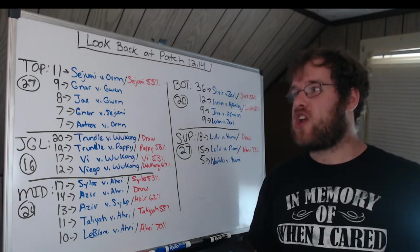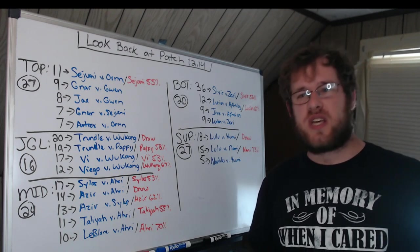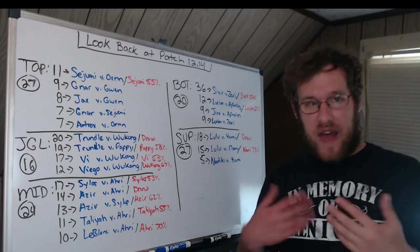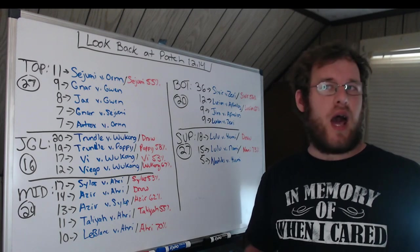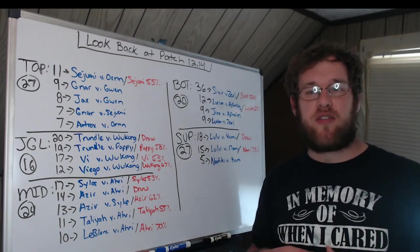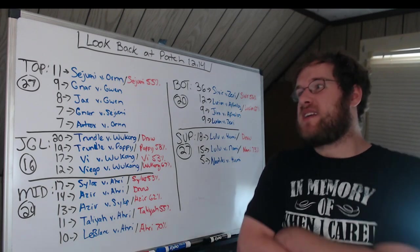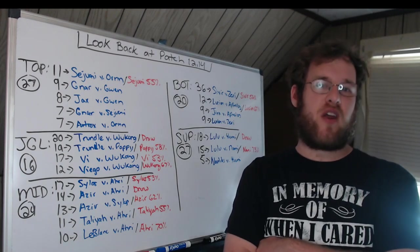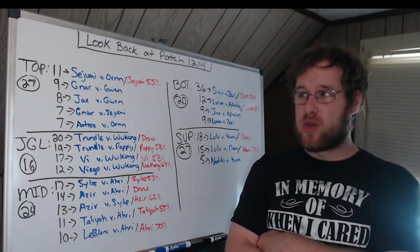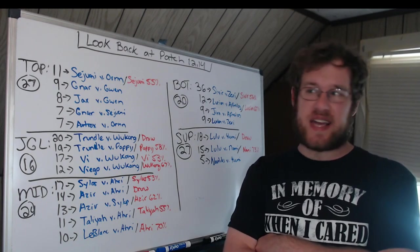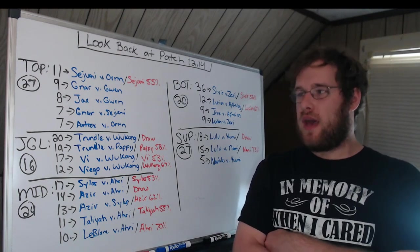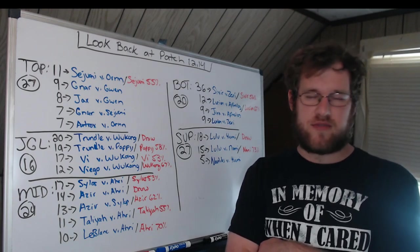Nar was getting banned a lot, but we saw Nar versus Gwen, Jax versus Gwen, Nar versus Sejuani, and Aatrox versus Ornn. The same champions kept appearing: Sejuani, Ornn, Nar, and Gwen. If Nar was banned, teams went Sejuani; if you go Sejuani, they go Ornn. Both are engage tanks, but Ornn has much more late-game value. Gwen prompted the choice between Nar for teamfighting or Jax for split push, while Aatrox got popular toward the end of the patch.